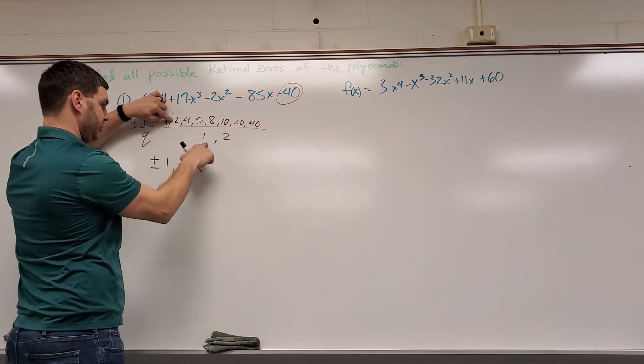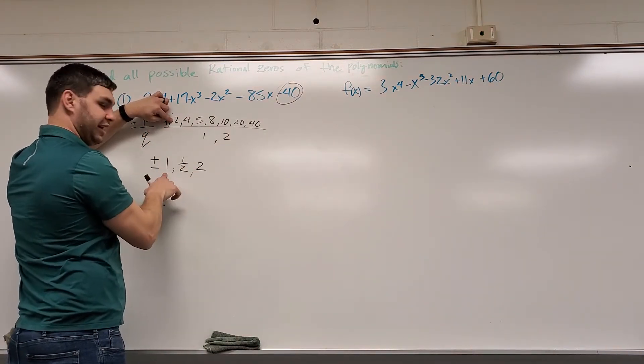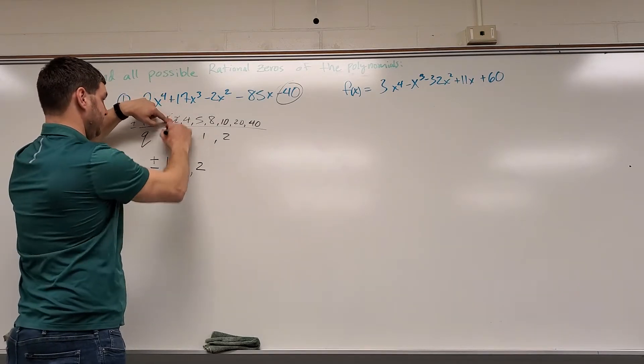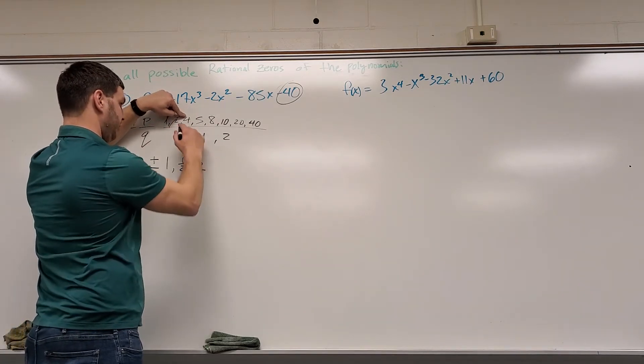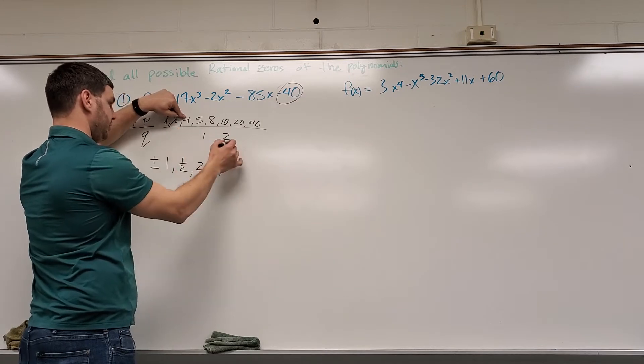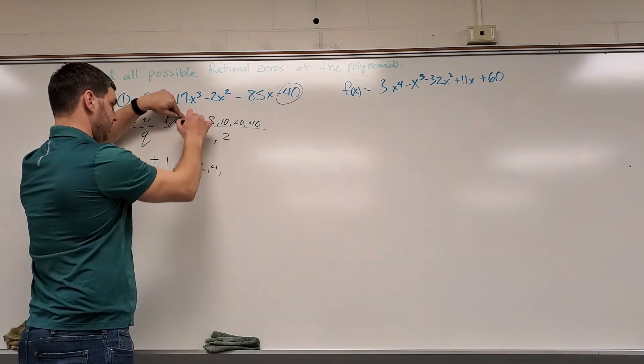What about 2? 2 over 1 is 2. 2 over 2 is 1, but we already have it, so I don't have to write that down again. 2 is done. What about 4? 4 over 1 is 4. 4 over 2 is 2, I already have that.